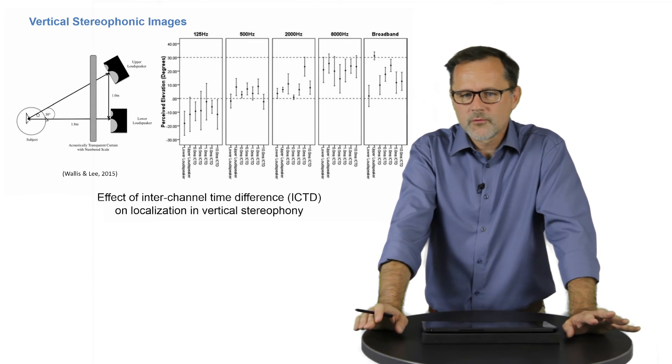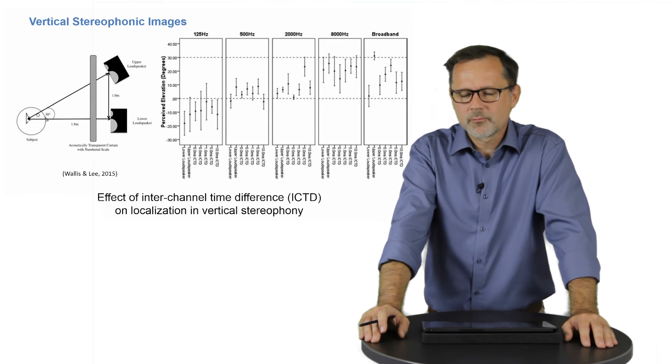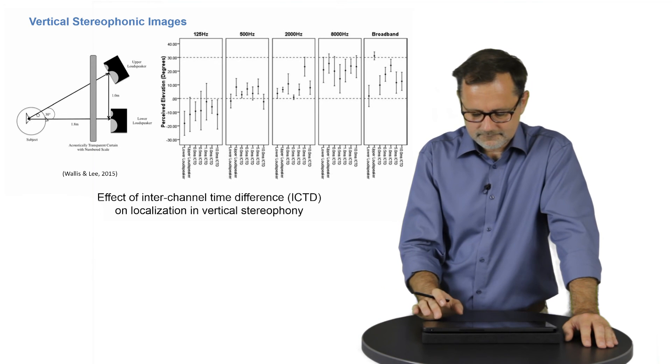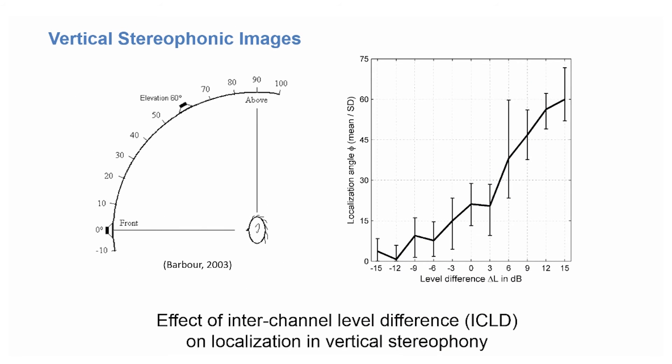If level differences are used rather than time differences, a slightly better behavior and a better defined transition can be seen in the vertical direction, however, again with large inter-individual differences. Thus, also, vertical loudspeaker pairs are not very reliable in producing phantom sources.